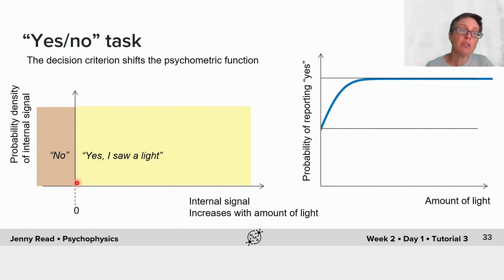The problem is that the decision criterion actually shifts the observed psychometric function. Suppose the observer sets their decision criterion at zero, then even when there's no light, they're going to report yes, I saw a light, half the time. Then clearly, when there's more light, they'll be more likely to report seeing one.